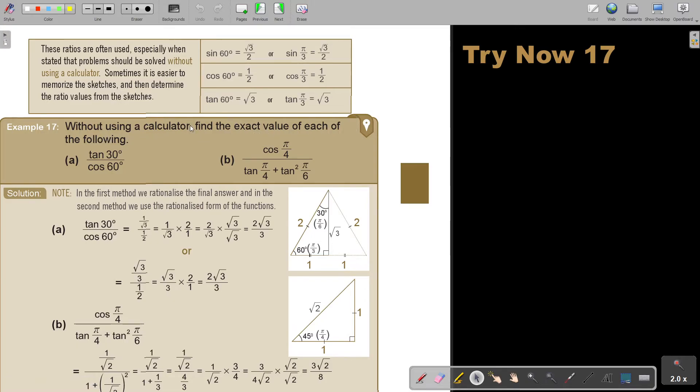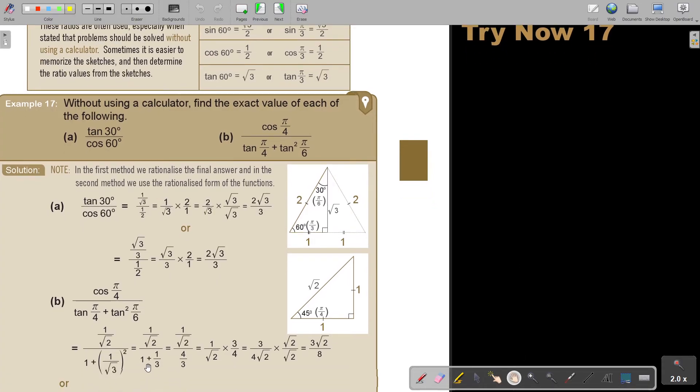Without using a calculator, find the exact value of the following. Now I just substitute the values. And then I just multiply with the reciprocal, and then I can rationalize the denominator. Now because it's not in this Namibian AS level syllabus, I think they will not penalize you if you leave it. But usually it's more simplified if you go in further mathematics, if you rationalize the denominator.